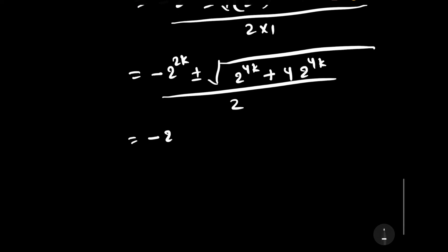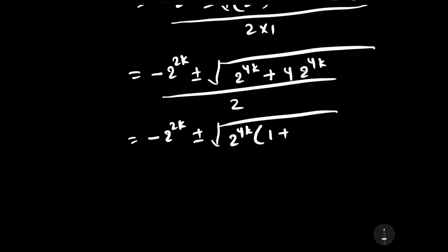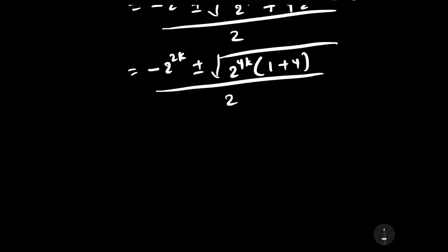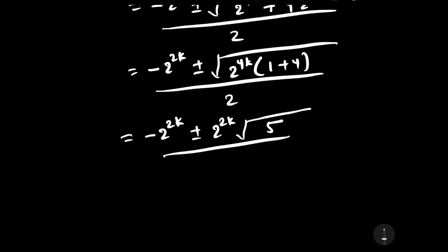We can write this further as minus 2 to the power 2k plus or minus square root of 2 to the power 4k times the quantity 1 plus 4, divided by 2. Taking 2 to the power 4k out of the square root gives 2 to the power 2k, so we get minus 2 to the power 2k plus or minus 2 to the power 2k times square root of 5, divided by 2.